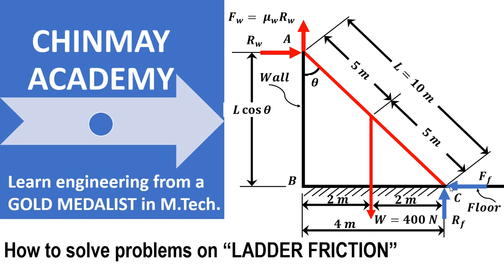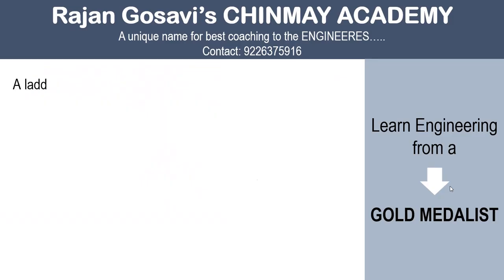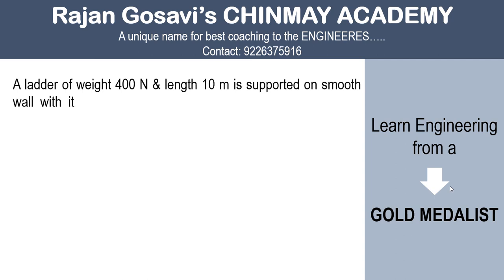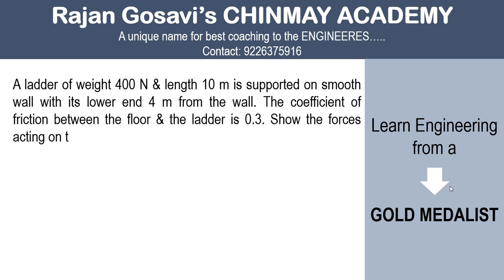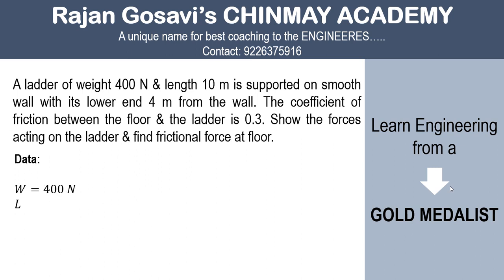In this video we'll understand how to solve problems on ladder friction. The problem states: a ladder of weight 400 Newton and length 10 meter is supported on a smooth wall with its lower end 4 meter from the wall. The coefficient of friction between the floor and the ladder is 0.3. We have to show the various forces acting on the ladder and find the frictional force.